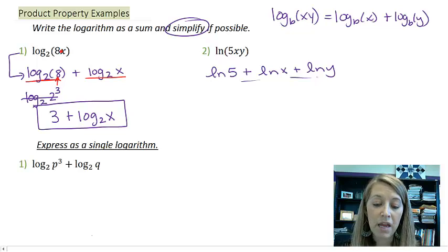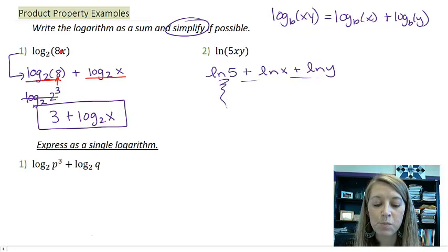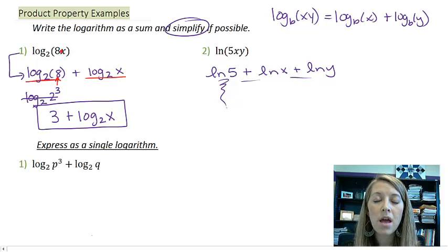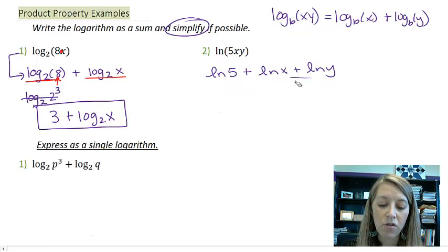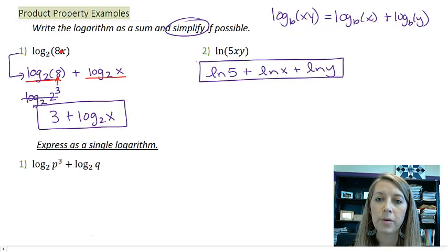I cannot simplify any of those here. I can write a decimal approximation for natural log of 5 by plugging it in my calculator. But that's going to give me a crazy, ugly decimal, which I do not want. I always want the exact format. And so that's what this is. And so this here is just my final answer.